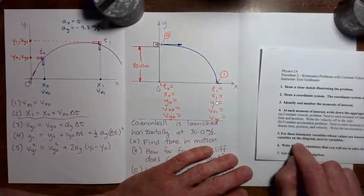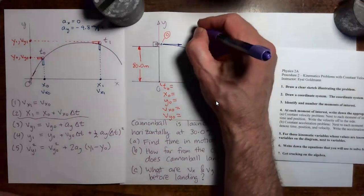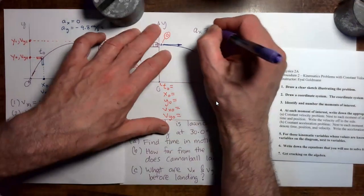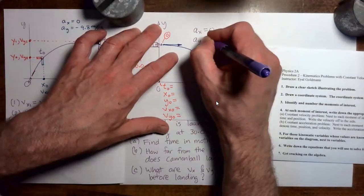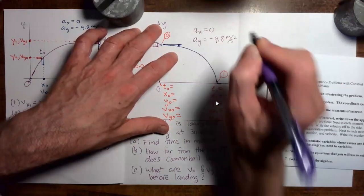Before we go to step five, let's put in the acceleration. As with other problems involving freefalling projectiles, we have that our x acceleration is zero, and our y acceleration is minus 9.8 meters per second squared.